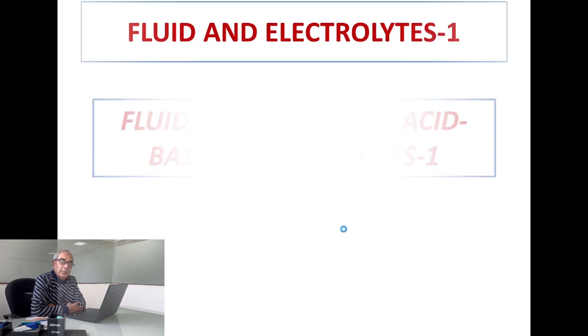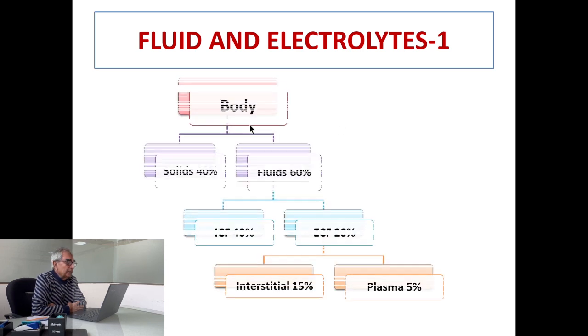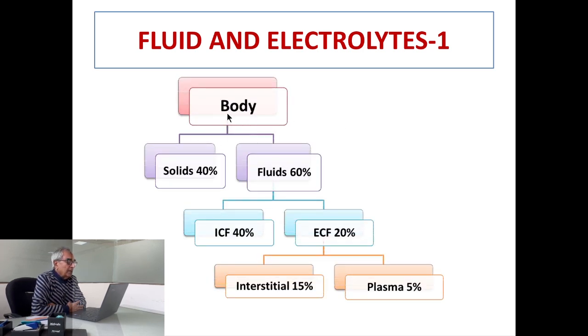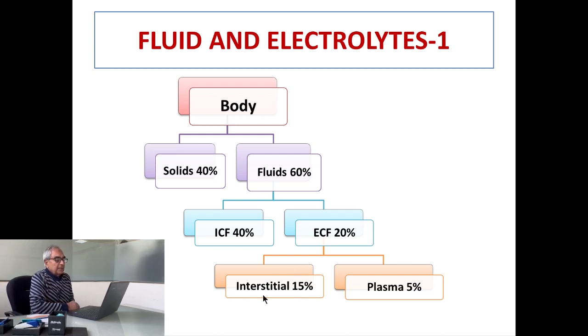All living organisms have about 40 percent solids and 60 percent fluids in their body. The fluids are divided into two compartments: the intracellular compartment which comprises 40 percent and the extracellular compartment which comprises 20 percent. Out of this 20 percent extracellular compartment, 15 percent fluid is found in the interstitial spaces and 5 percent is plasma.